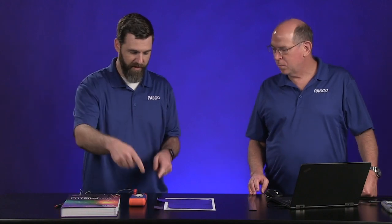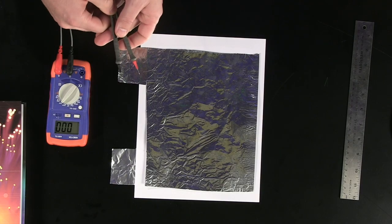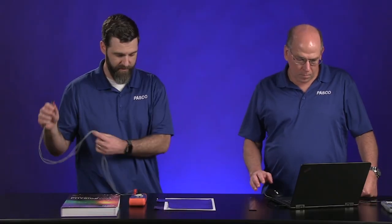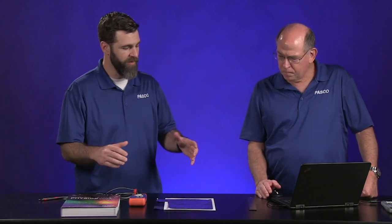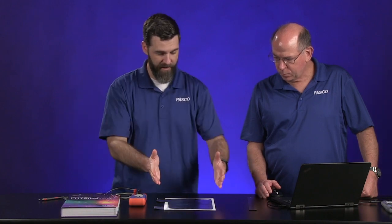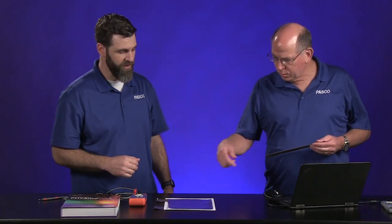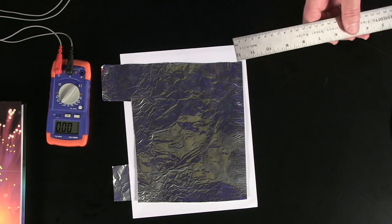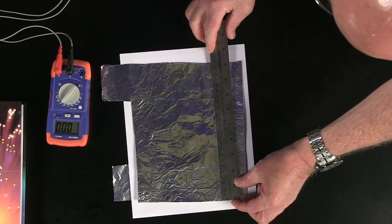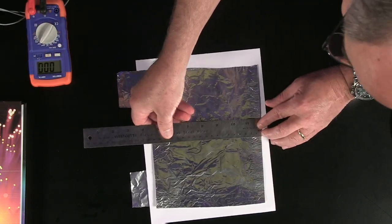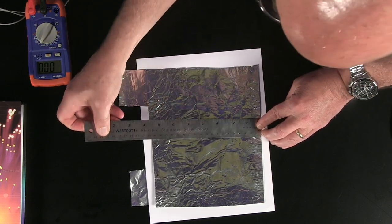So our capacitor has some capacitance. It's really small, so we need a meter that can measure it really small, which is what we have here. I think in this experiment, we're going to test the effect of a couple things on how much capacitance we can have here. One of them is the area. So that's like 23.5 and 19.5.